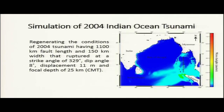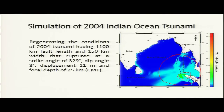We are simulating the 2004 Indian Ocean tsunami. This tsunami was generated during the 2004 Indian Ocean earthquake, recreating conditions with a fault length of approximately 1100–1300 km and a fault width of 150 km, rupturing at a strike angle of 329°. These are the fault parameters given in NAMI DANCE software to generate this tsunami. The wave height in the Indian Ocean was around three to four meters near the epicenter of the 2004 tsunami.